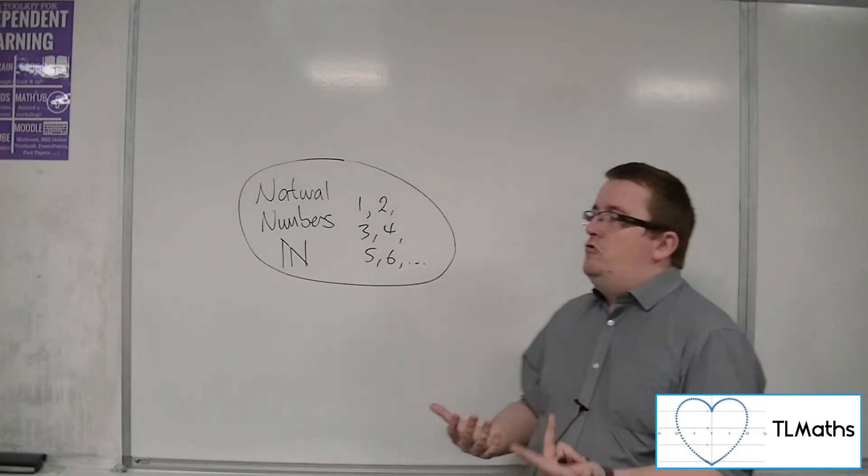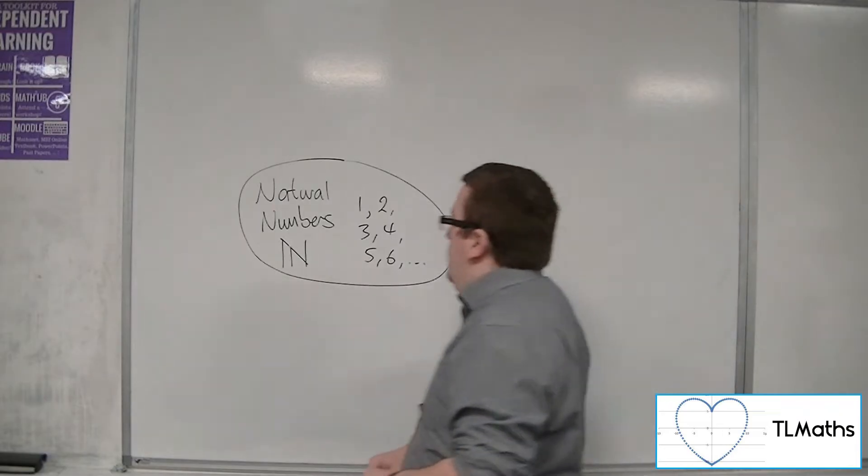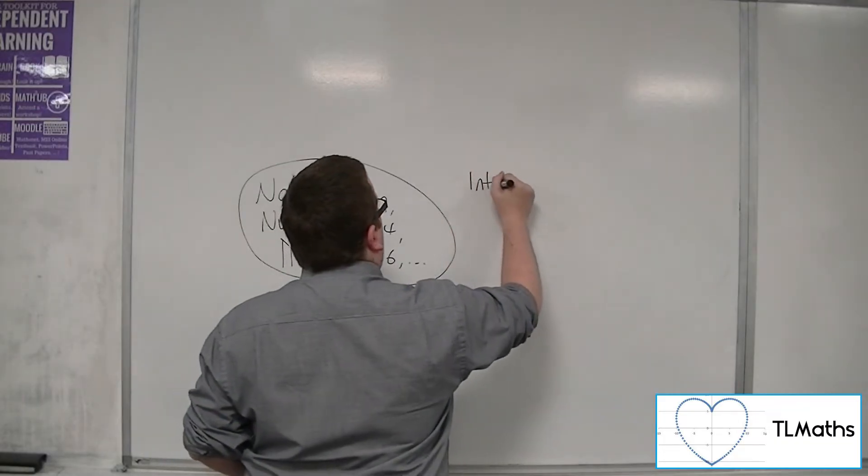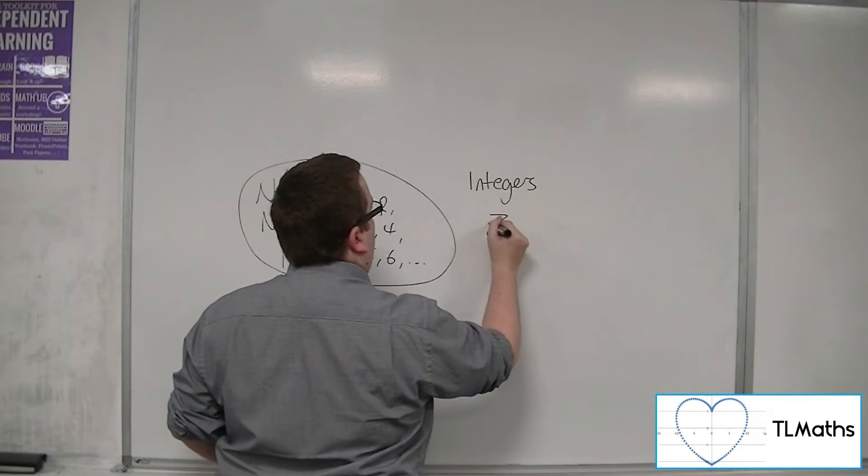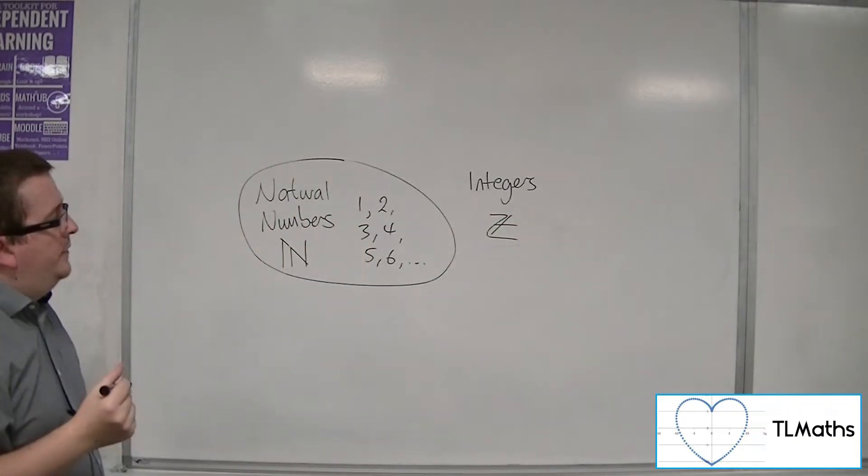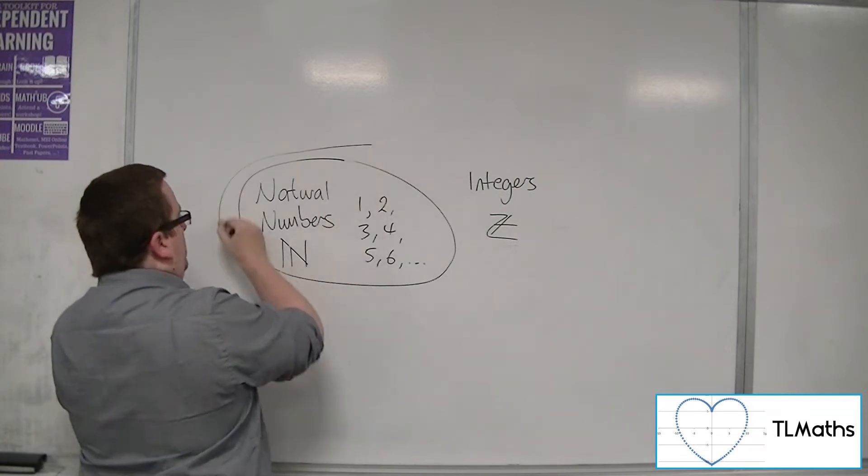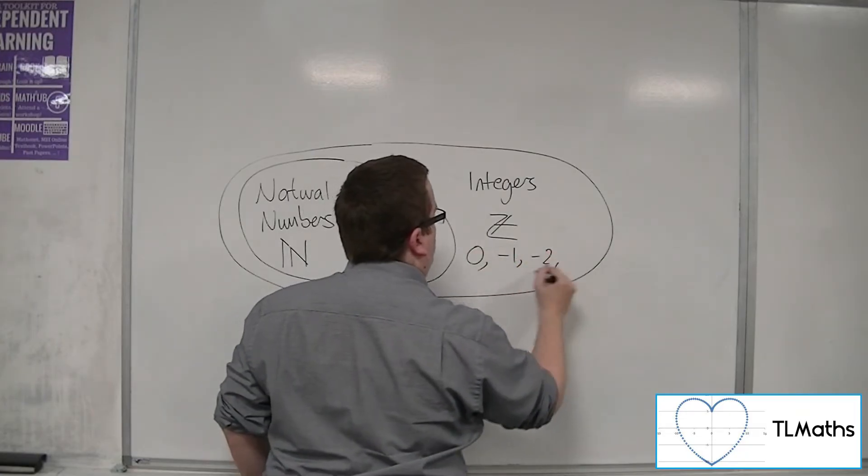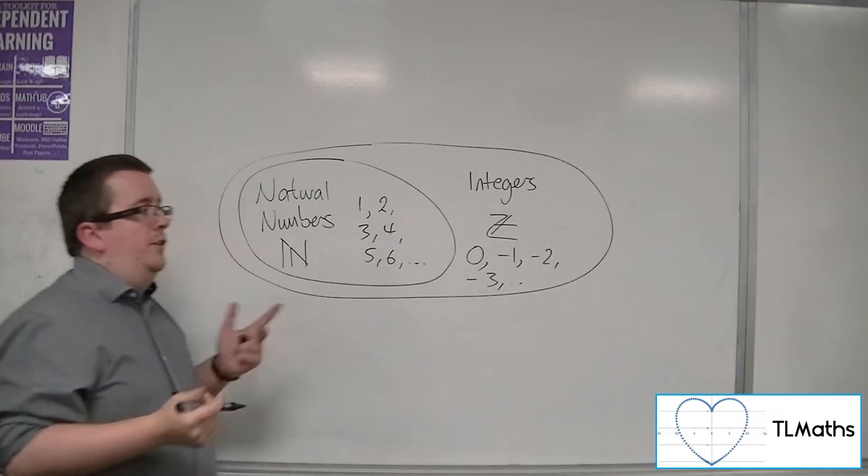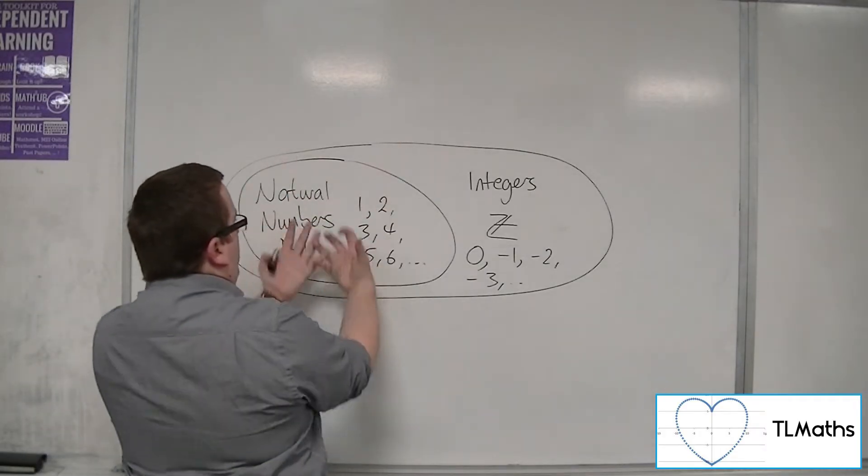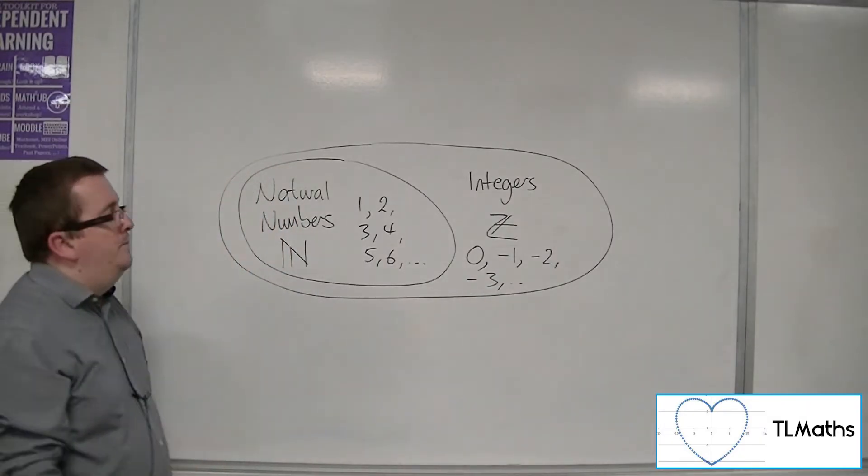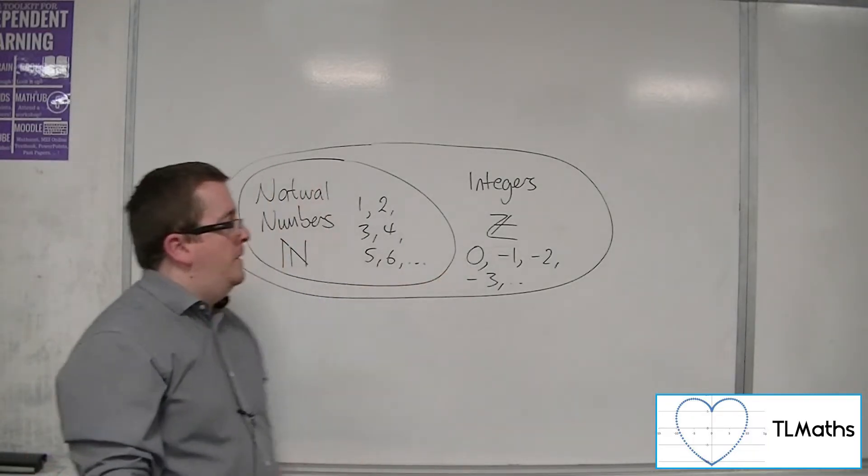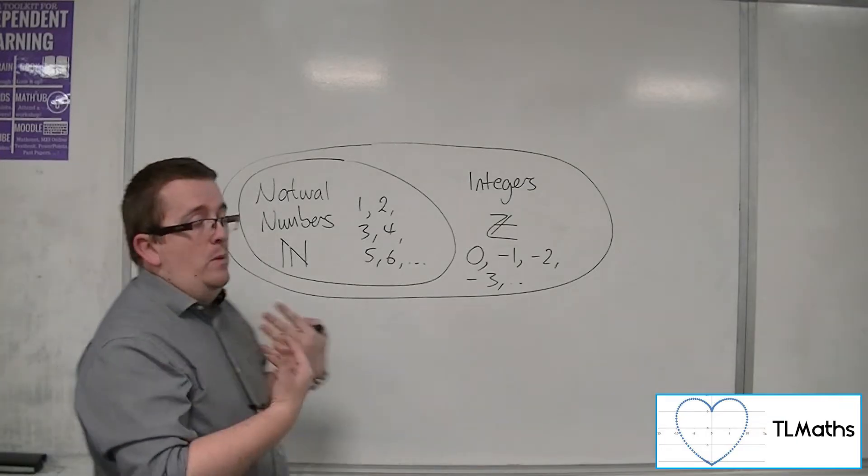So if we now want to include 0 and those negative numbers, minus 1, minus 2, minus 3, that introduces us to the integers. So the integers are represented with a capital Z. And they include all of the natural numbers plus 0, minus 1, minus 2, minus 3, minus 4, minus 5, etc. So it's including all of the natural numbers plus a load more. It's twice the size of the natural numbers plus a little bit extra. That's 0. So that's what we mean when we talk about integers.